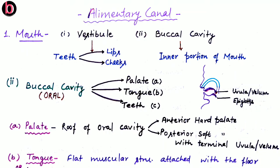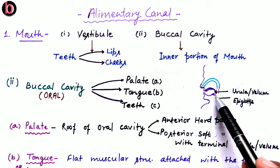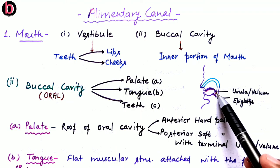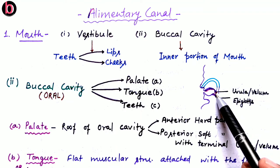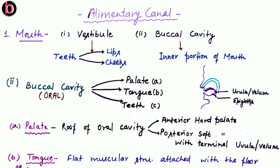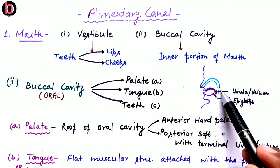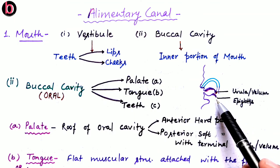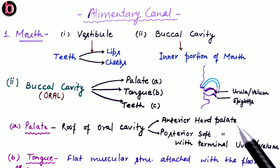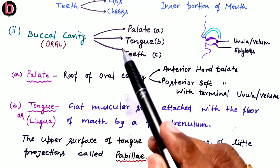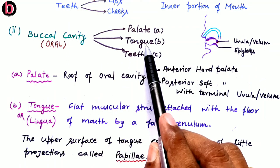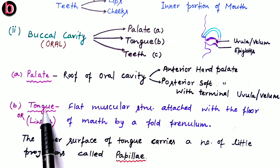The posterior duct is the food pipe or esophagus. To ensure the entry of water and food material into the food pipe, there are two structures: the uvula or velum, which causes closure of the nasal chamber so food cannot enter through it, and the epiglottis, which causes closure of the windpipe or trachea so food or water cannot enter through it. The second part of the buccal cavity is the tongue.